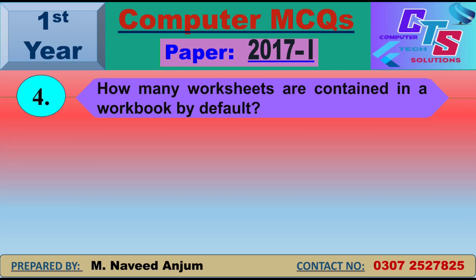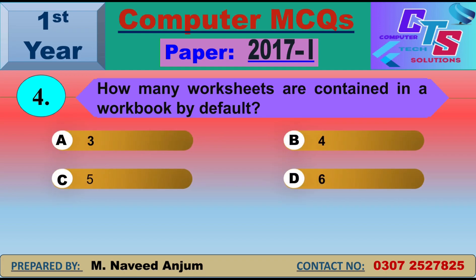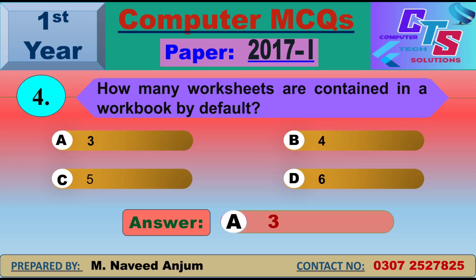Question number 4: How many worksheets are contained in a workbook by default? When you open a workbook, by default you can see three sheets at the bottom — Sheet 1, Sheet 2, Sheet 3 — in MS Excel. So by default, option A — three — will be the right answer.